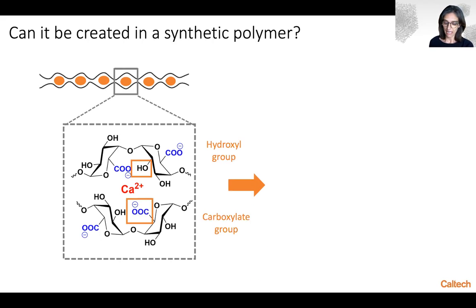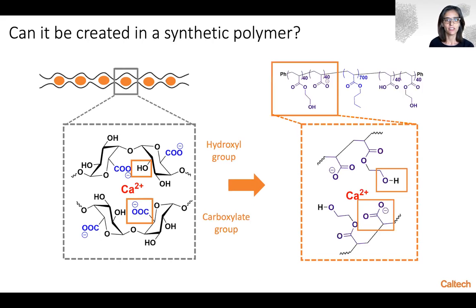So we decided to create an analog structure that you see here, creating an ABA tri-block copolymer using a solvent ethanol, which is composed of three parts.